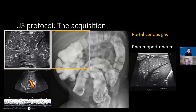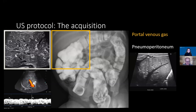Do you routinely include the SMA-SMV vascular protocol on your necrotizing enterocolitis protocol? Yes. We didn't at first but recently added that. There's some overlap that can mimic each other, so it makes sense to have evaluation of the SMA-SMV in the NEC protocol.